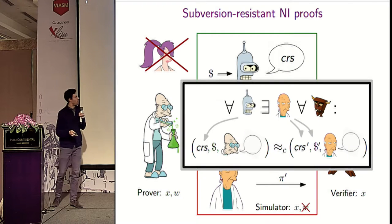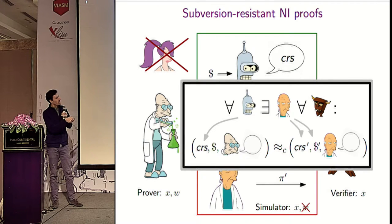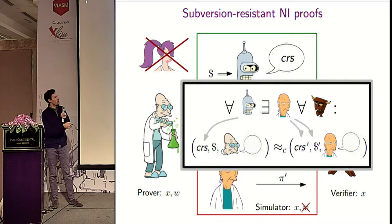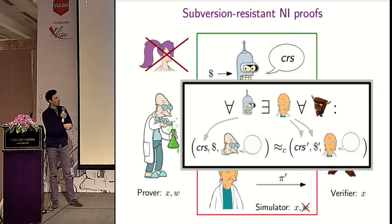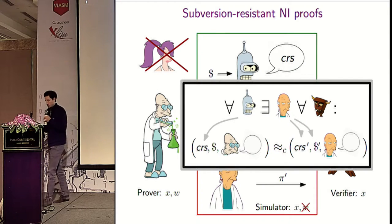More precisely, for any CRS subverter there exists a simulator that outputs a CRS and coins indistinguishable from those output by the subverter, and additionally simulates proofs — so the adversary cannot distinguish whether it is given a real proof oracle or a simulated one. This is what we call subversion zero knowledge.